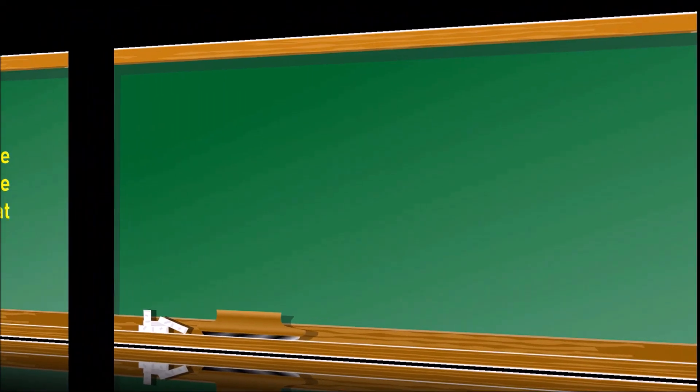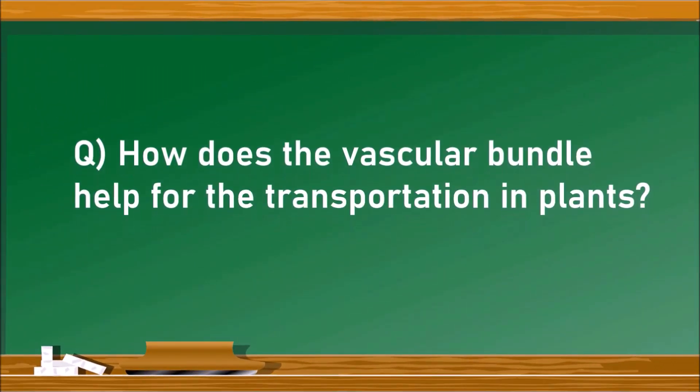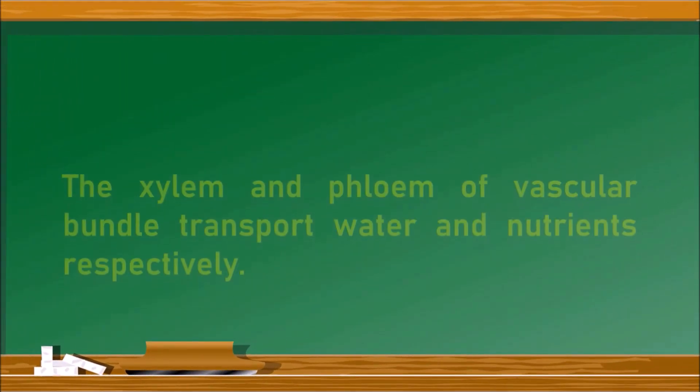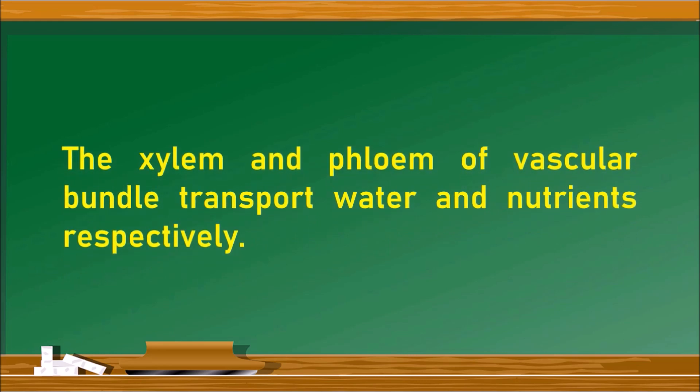The next question. How does the vascular bundle help for the transportation in plants? The vascular bundle constitutes of xylem and phloem. So the xylem and phloem of vascular bundle transport water and nutrients respectively.